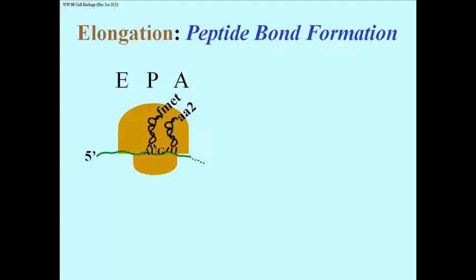The next step, now that you have two amino acid tRNAs, one in the P-site, one in the A-site, is peptide bond formation.